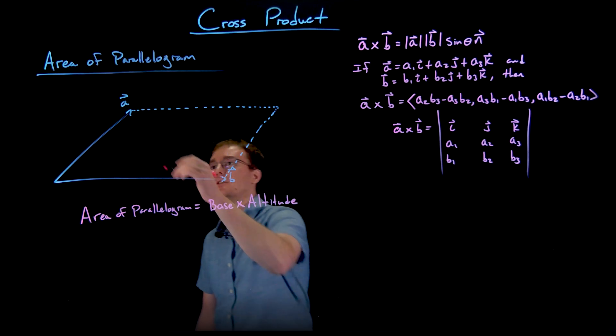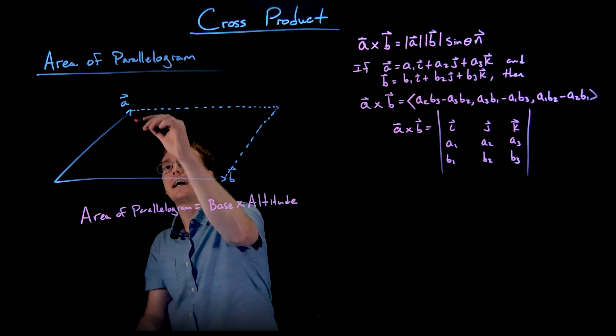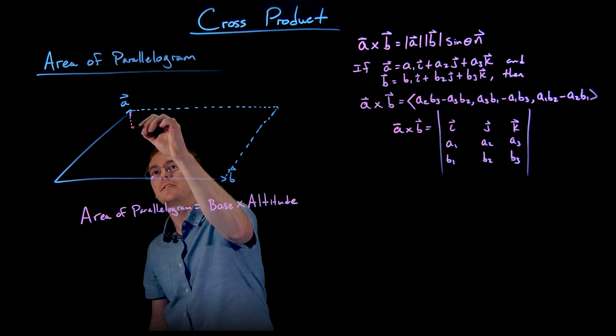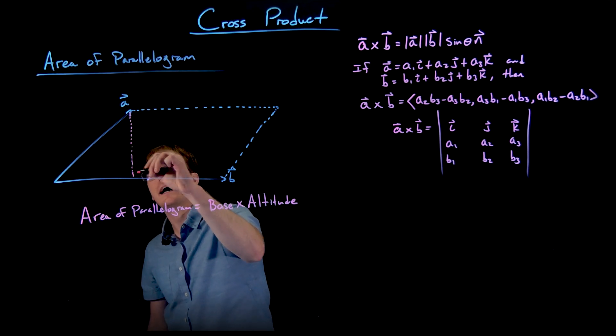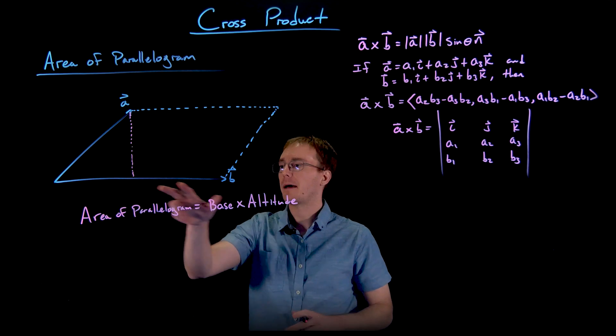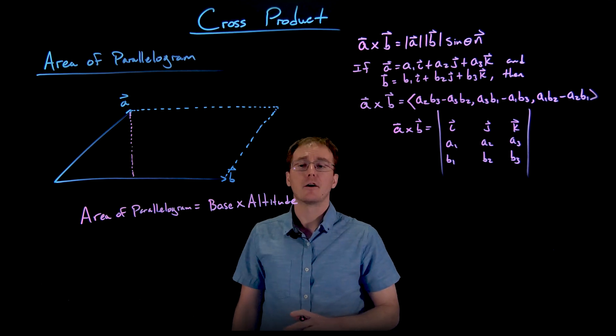Right, and so what we mean by the height or the altitude is not the length of that second diagonal or slanted vector, but the actual height of our parallelogram measured from that baseline denoted by our vector B.